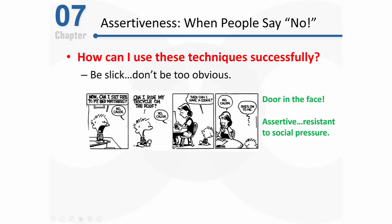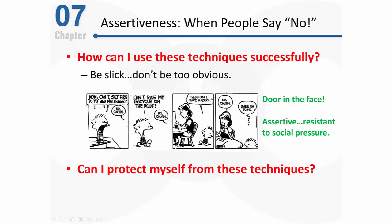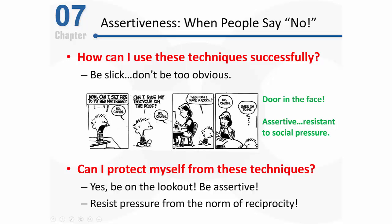These techniques work, but you can't let people understand that you're trying to use them. Can you protect yourself from having these techniques used on you? Of course — but you need to be on the lookout. When I went into that car lot, I was familiar with low-balling, so I could see it happening and I was assertive. Also, try to resist pressure from the norm of reciprocity. Just because someone's offering a concession, don't feel so pressured to shift your no to a yes in return. If you can resist that norm of reciprocity, you will resist becoming a sucker.